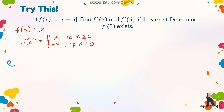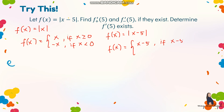Applying this to absolute value of x minus 5: the expression inside, x minus 5, can be positive or negative. It will be positive when x minus 5 is greater than or equal to 0, and the function will be negative x minus 5 when x minus 5 is less than 0.